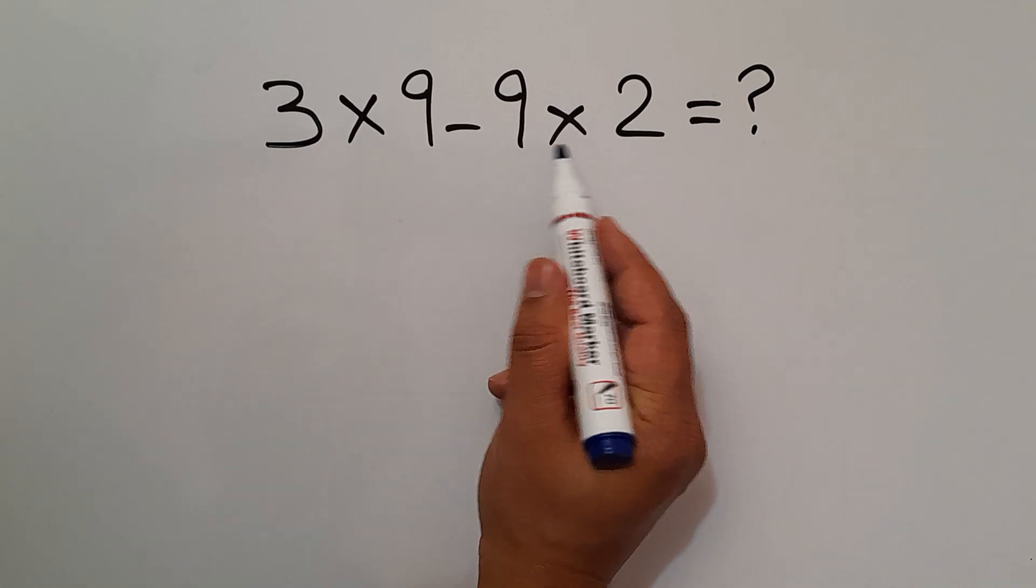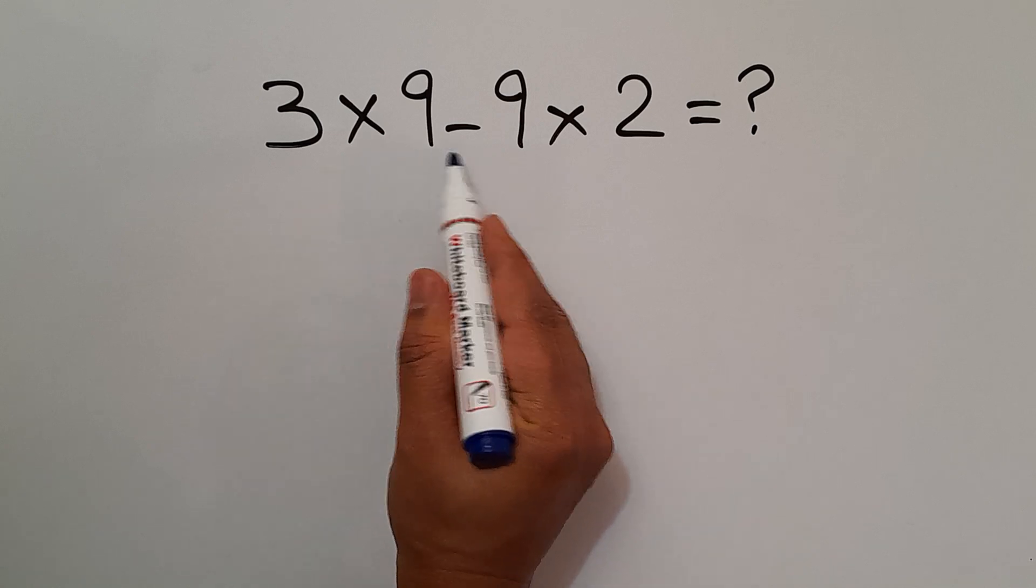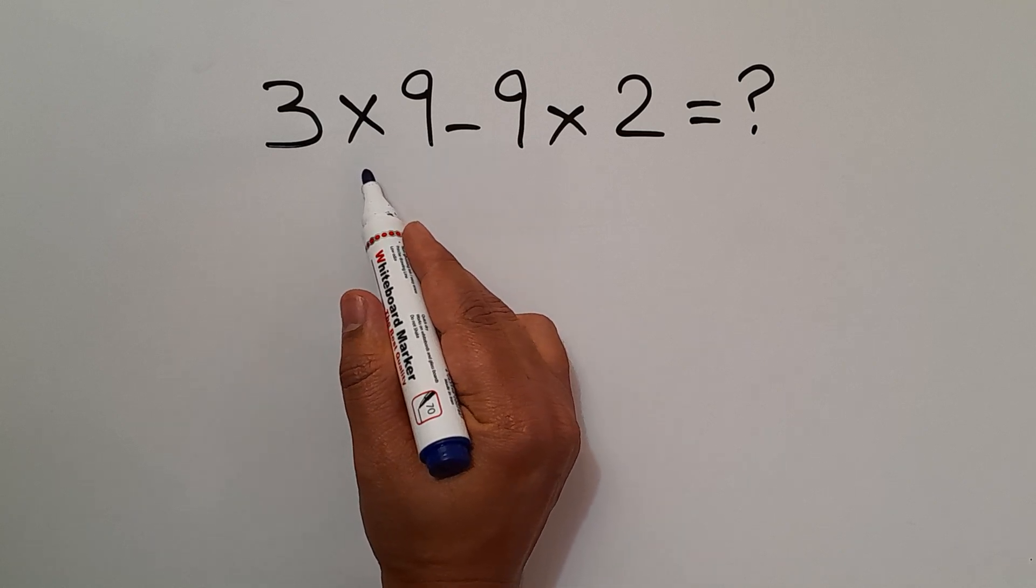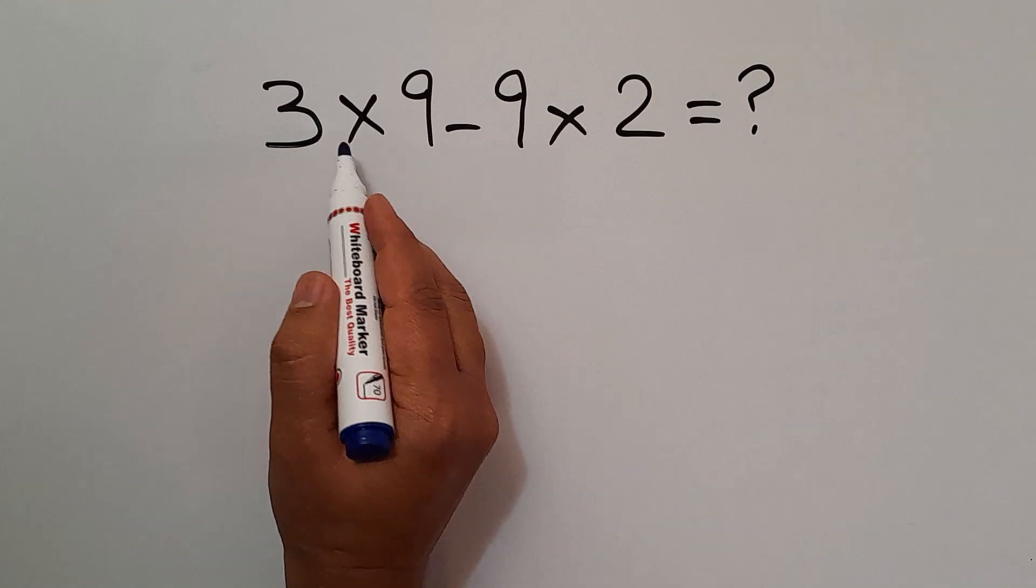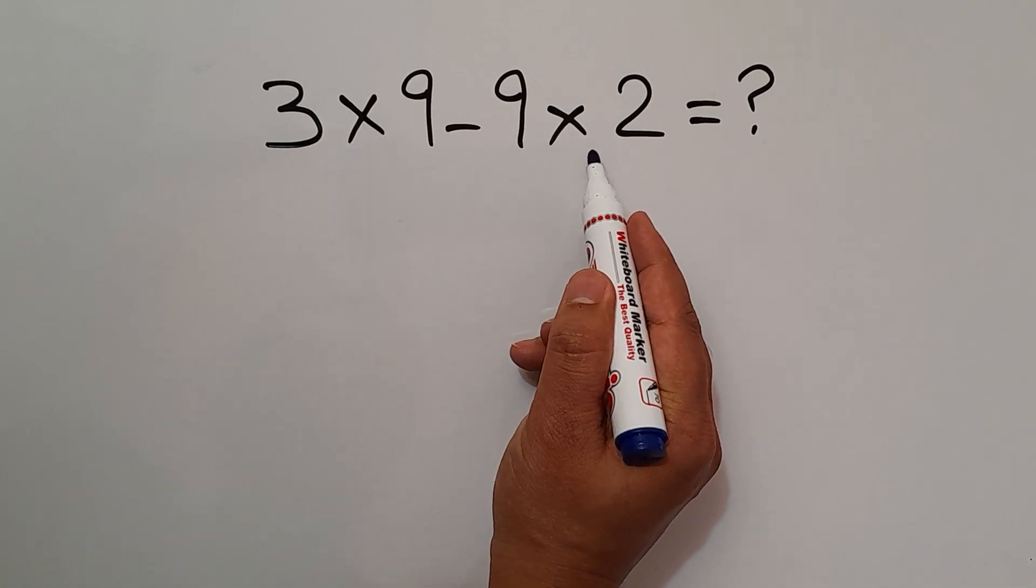In this expression we have two multiplications and one subtraction. As we know, multiplication has higher priority than subtraction, so first we have to handle multiplication. We have to work from left to right, so first this multiplication, then this multiplication, and finally this subtraction.